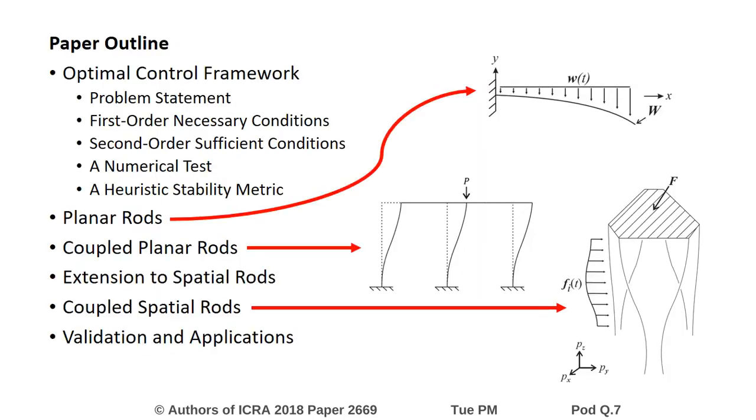In this paper, we adapt results from optimal control to determine the stability of Kirchhoff rods and Cosserat rods subject to general end constraints, including the coupled multi-rod models which describe parallel continuum robots. We formulate a sufficient condition for the stability of a given solution and also present a numerical test for evaluating this condition.